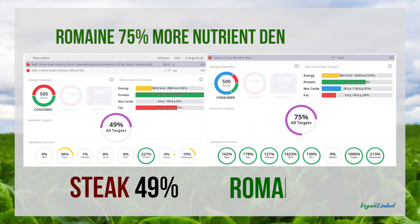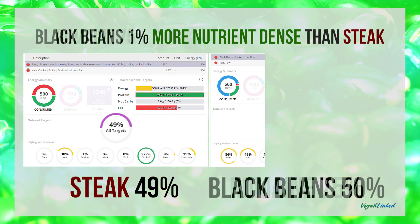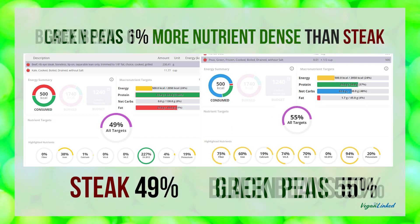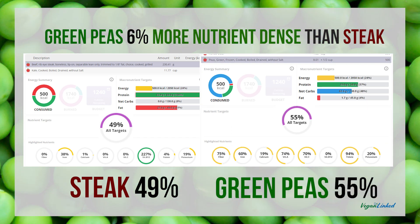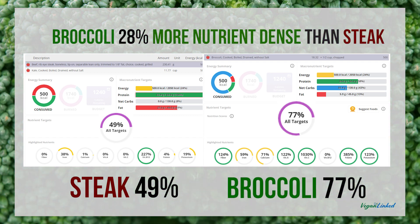Romaine lettuce is 75 percent more nutrient-dense than steak. Black beans are one percent more nutrient-dense than steak. Green peas are six percent more nutrient-dense than steak. Broccoli is 28 percent more nutrient-dense than steak.